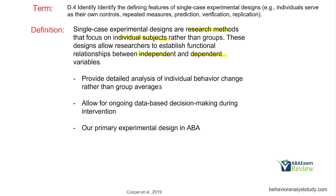We can look at a detailed analysis of individual behavior change rather than group averages — how is the behavior of the individual changing rather than a group of 20. Through this analysis and data collection, we can make ongoing data-based decisions with repeated measures. This is our primary design used in ABA, and we use visual analysis for the most part as opposed to standard statistical analysis.